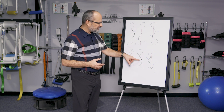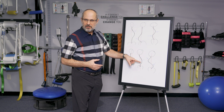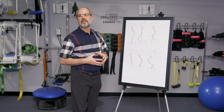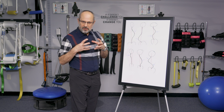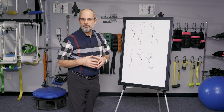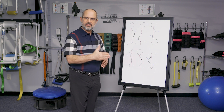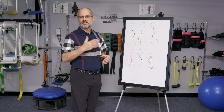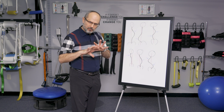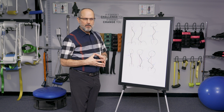And here we have a thoracolumbar scoliosis. Here the apex, or the part that's furthest from the red line, would be between the 12th thoracic to the first lumbar vertebra. It's a little bit more focused.